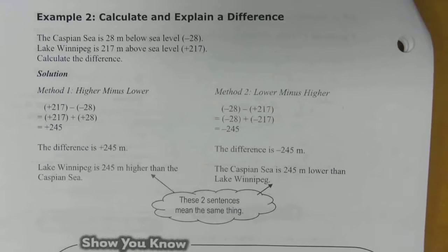Example number two, calculate and explain a difference. The Caspian Sea is 28 meters below sea level. Sea level itself is usually considered a mark of zero. It's like a number line. Anything above sea level would be positive. Anything below sea level is negative.